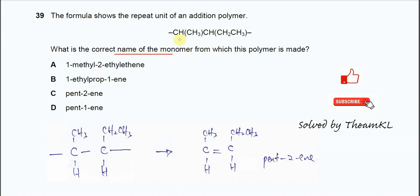We need to use this polymer chain to find out the monomer. From this diagram or structure we know that this one is the sidechain.